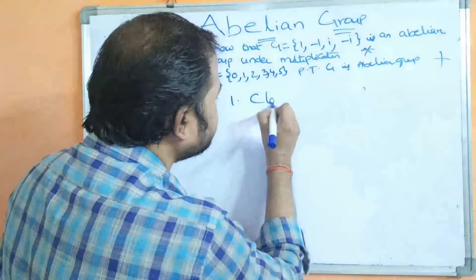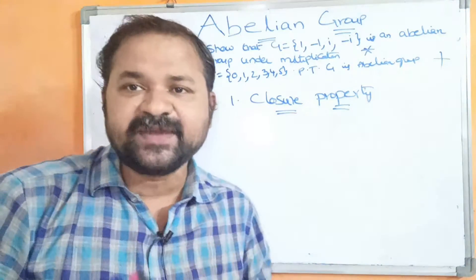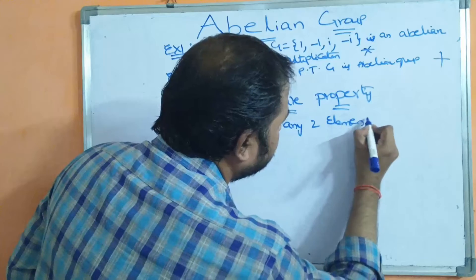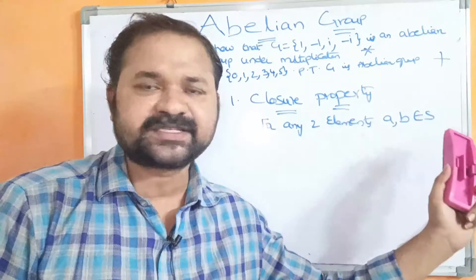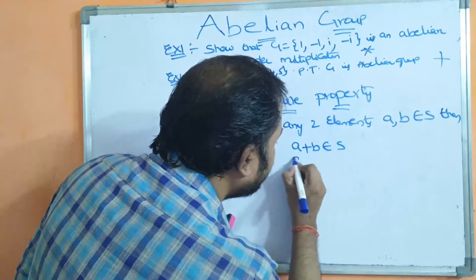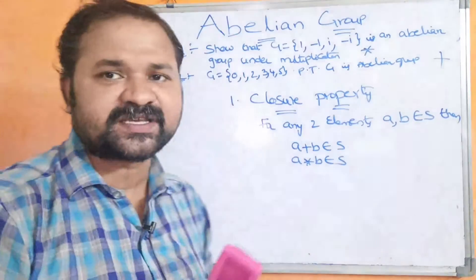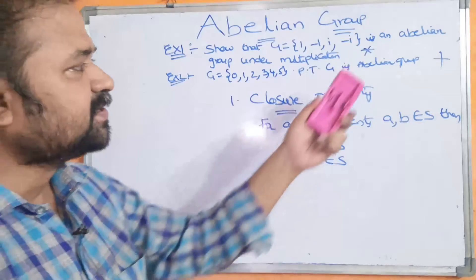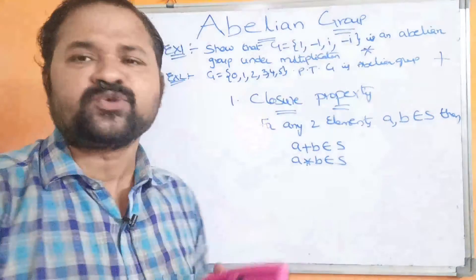The first property is closure property. Closure property means we have to take two elements from the set. For any two elements A, B belonging to S: if A + B belongs to S and A ★ B belongs to S, then we can say that closure property is satisfied.